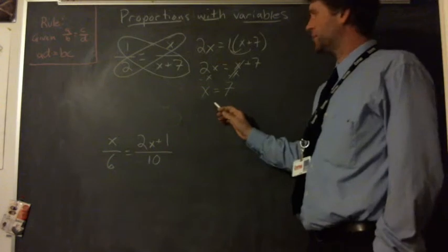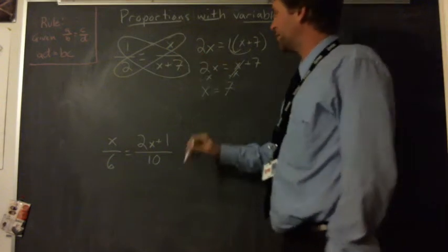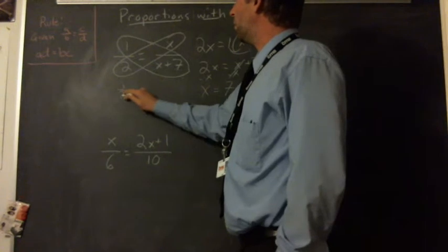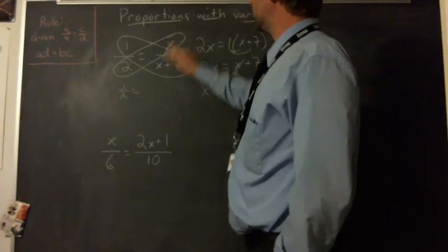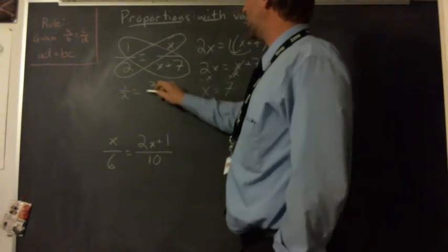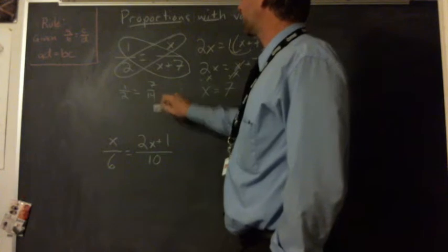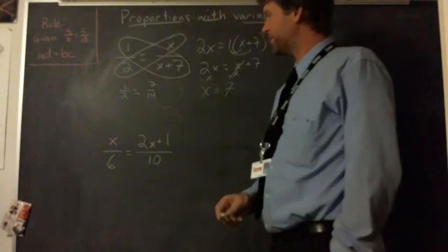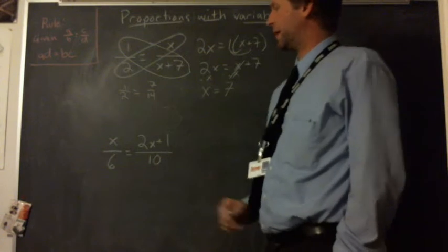We've solved that for x. Double check by putting it back in. One half equals seven over fourteen. And that looks about right to me. Seven divided by fourteen is one half.